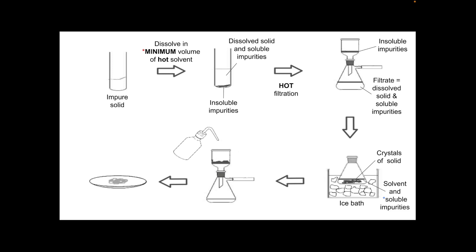We need to separate the solid from the liquid there, so we do another reduced pressure filtration. This time we'll get the crystals of solid, the solid we want, getting trapped on the paper. The filtrate will be your solvent and any soluble impurities.